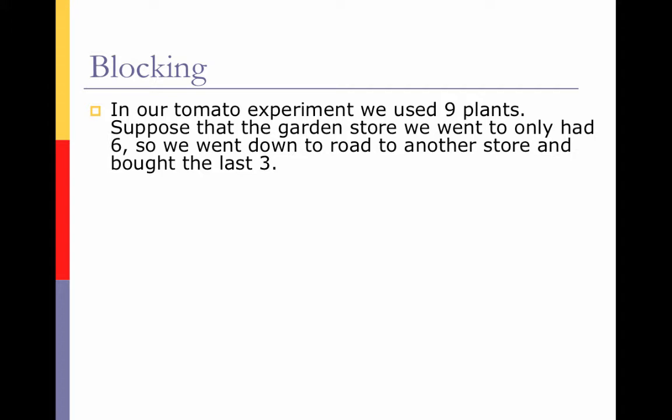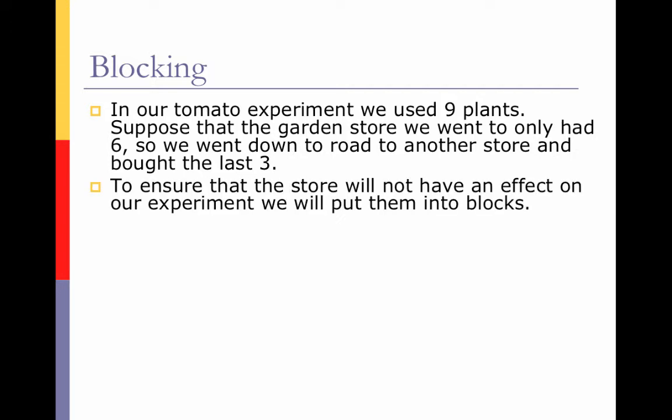In our first video, we talked about growing tomatoes using OptiGrow to determine if they were juicier and tastier. In that experiment, we used nine different plants. Suppose that the garden store that you went to buy your tomato plants only had six. So you bought those six and then had to go down the road to another store to buy your last three. This is an issue — we have to ensure that the store will not have an effect on our experiment. Perhaps one store is better at taking care of their plants than the other, so one will produce better results. Therefore, what we have to do is block out that variable.